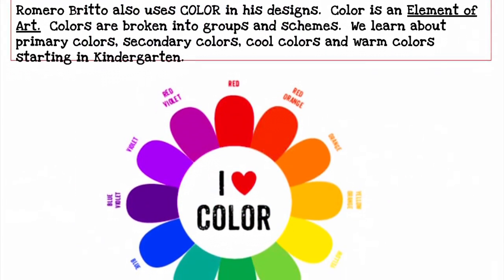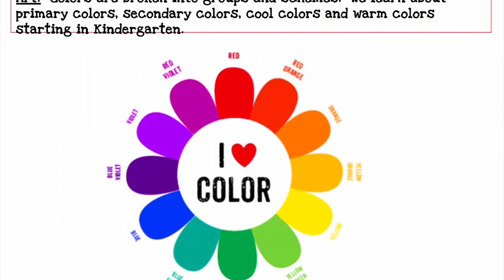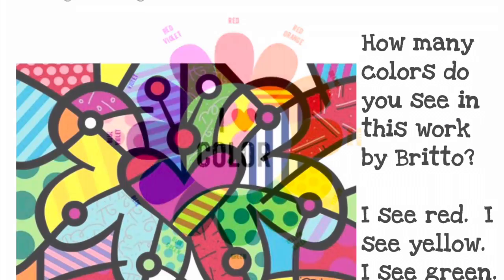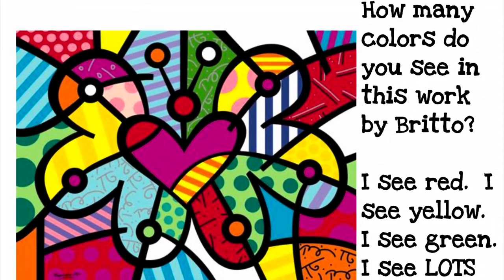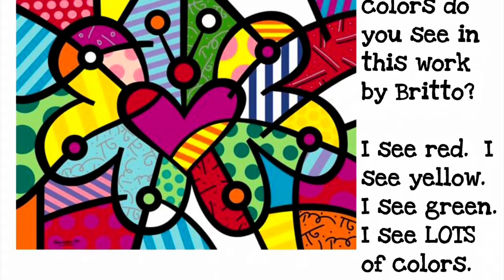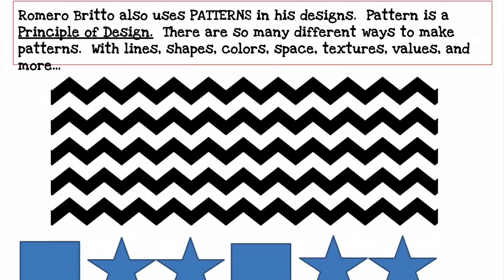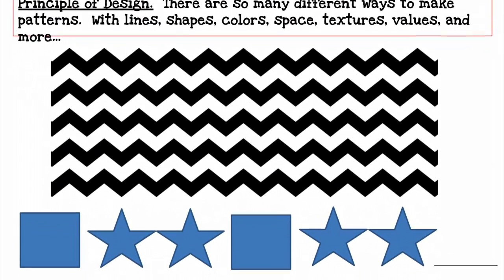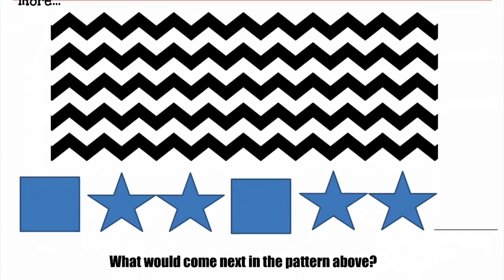Romero Britto also uses colors in his designs. We've discussed all of our color groups and color schemes in class. Let's look and see how many different colors you can see in just one Romero Britto artwork — I see lots and lots of color. He also uses patterns in his designs. You can make patterns with lines, shapes, colors, textures, or values.